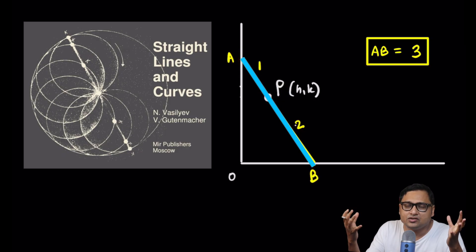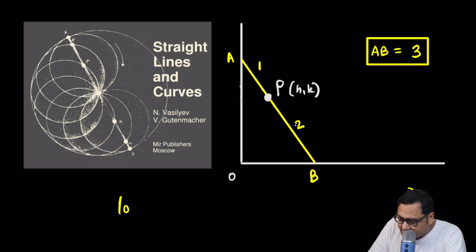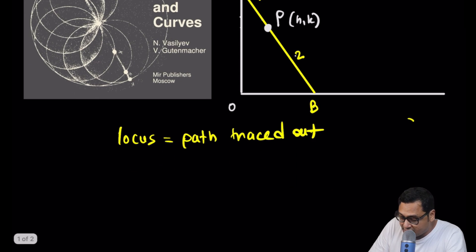The length of AB is 3. So if P divides AB into a 1:2 ratio, AP is 1 and PB is 2. The question is: what is the locus of the point P — the fixed point that divides AB into a 1:2 ratio? The word locus means it is the path traced out by a moving point.